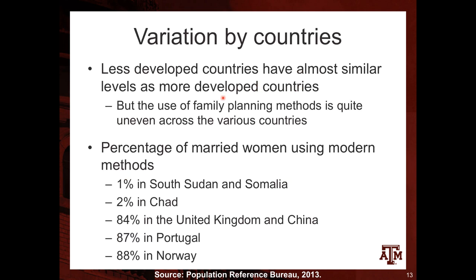Less developed countries have almost similar levels as more developed countries, but the use of family planning methods is quite uneven across various countries, mostly when comparing more developed countries to the least developed countries. The percentage of married women using modern methods varies a lot across countries — in South Sudan, Somalia, and Chad, the percentage is much lower than in the UK, China, Portugal, and Norway.